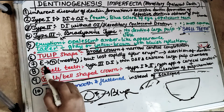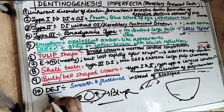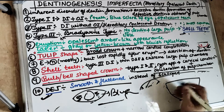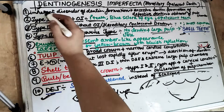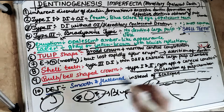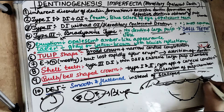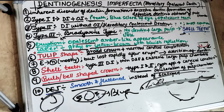In Dentinogenesis Imperfecta, the enamel is mostly normal but is lost early due to poor bonding between the enamel and the dentine because of an abnormal dentino-enamel junction. The DEJ in DI is smooth and flattened rather than the normal scalloped DEJ. Because of poor bonding, there is early loss of enamel after eruption, leading to severe attrition and abrasion of the dentine.